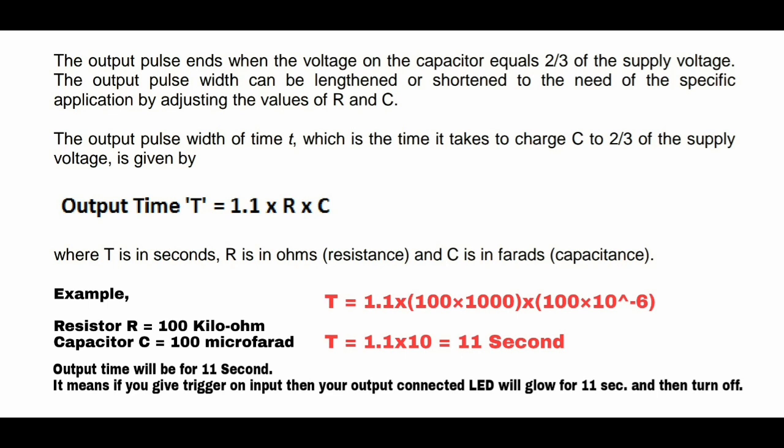The output pulse ends when the voltage on the capacitor equals two-thirds of the supply voltage. The output pulse width can be lengthened or shortened for the specific application by adjusting the values of R and C. The formula is: output time T equals 1.1 × R × C, where R is in ohms and C is in farads.